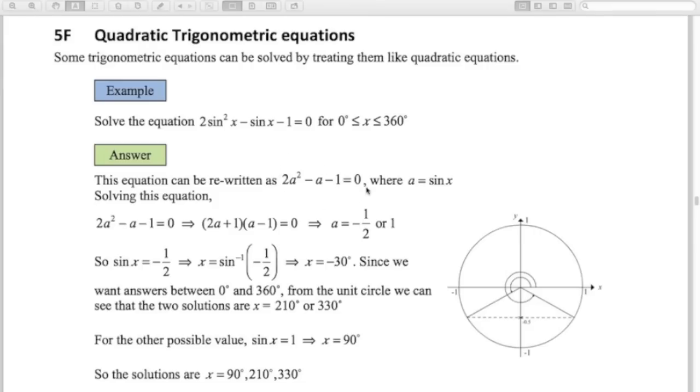So you can use your usual techniques to try and solve these, factorise it. In this case, a lot of them, and most of them in the exam, will factorise nicely, as this one does. So in this case, we've got a equals negative 1 half or 1.